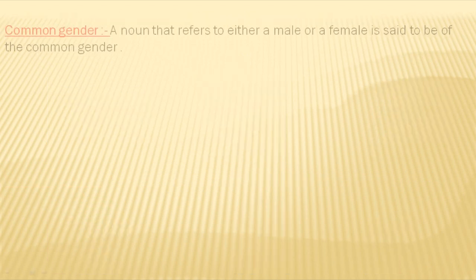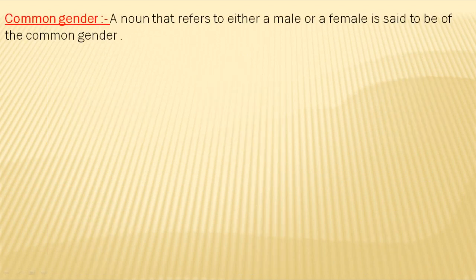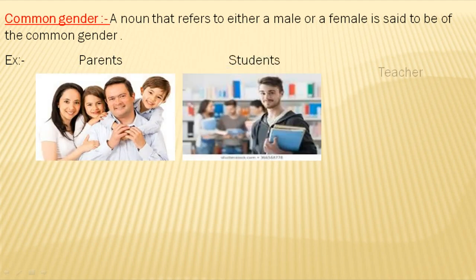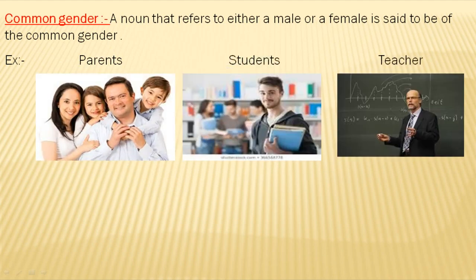Next, we will learn about common gender. A noun that refers to either a male or a female is said to be of the common gender. For example: parent, student, teacher, artist, etc.